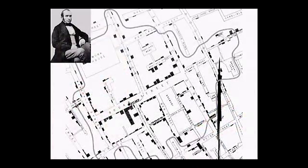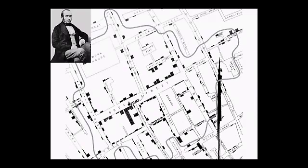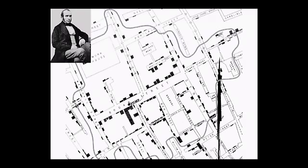I want to explain why it's wrong. But just to explain the map for those who don't know it: the map is showing deaths at all the various addresses. These big black bars you see right around the pump in the center — the longest one is a residence where about 20 people died. There's a bar for each death. You can basically see death radiating out from that pump; it gets thinner the further you get from the pump.